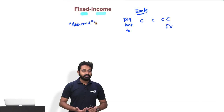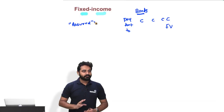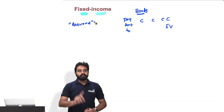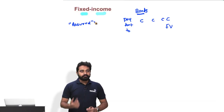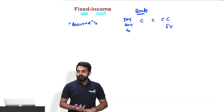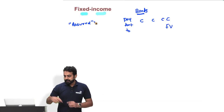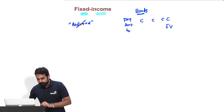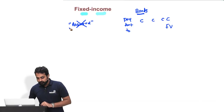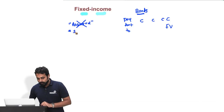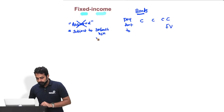No, clearly not. The word fixed income means if everything goes well, then your income is fixed — which is not the case with equities. With equities, your dividend could change even if things are going well. You never know in advance how much you're going to make. We cannot use the word 'assured' because it is always subject to default risk, or an alternate word: credit risk.